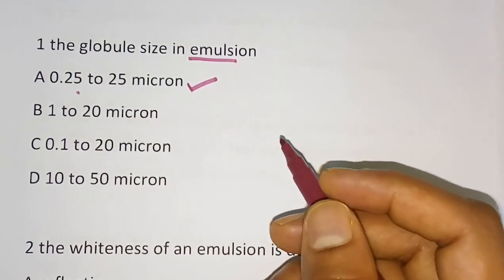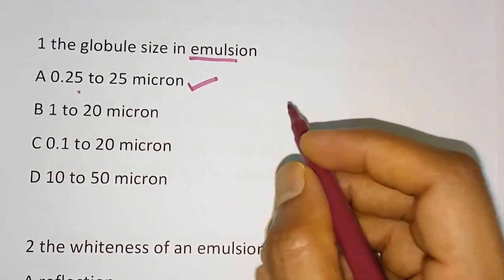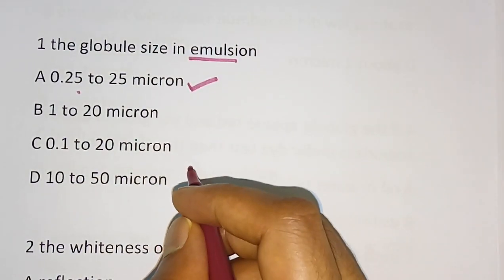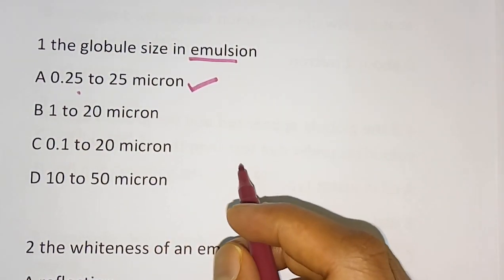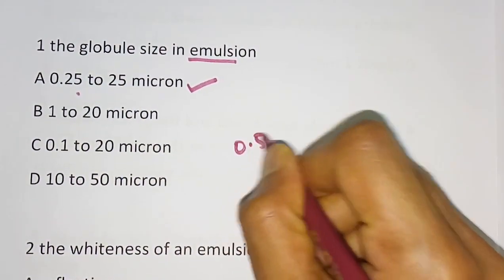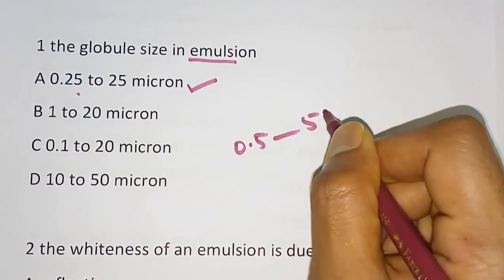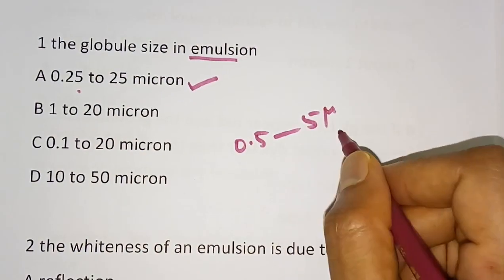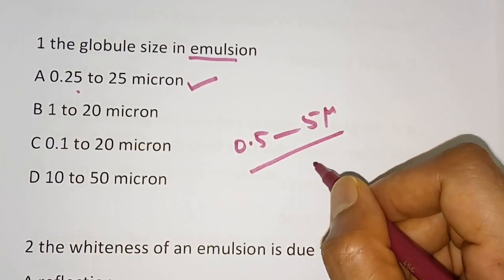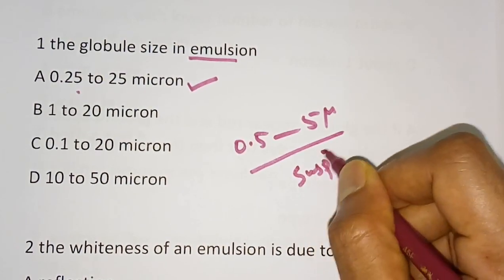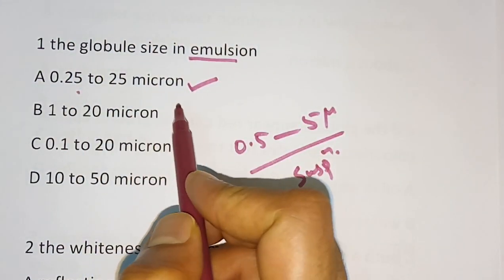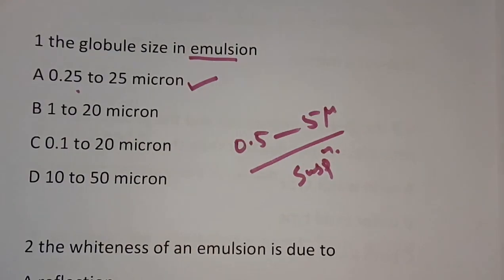In case of suspension, as we discussed in the suspension video, the size of the solid particle is 0.5 to 5 micron. Here in the emulsion, the globule size is 0.25 to 25 micron.